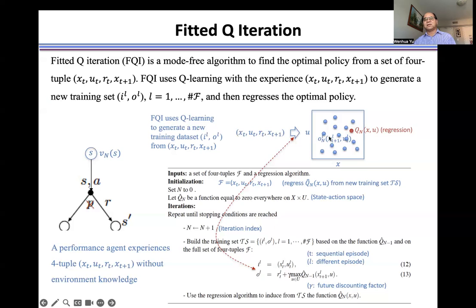Once we have this distribution of the O, that means for given state and the action, we know the Q value. And then using the regression method, we can find Q at a given state and the action.